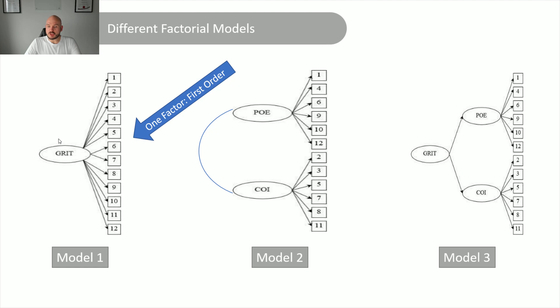So all of the items load directly onto grit. So that is what we call a first order factor, right? Because it's the first thing that we observe, that we estimate, not observe, that we estimate, that we make up out of observed stuff.